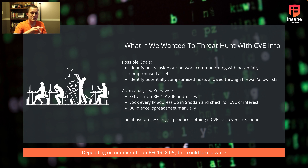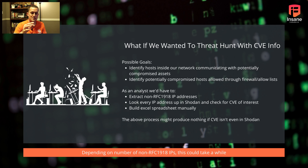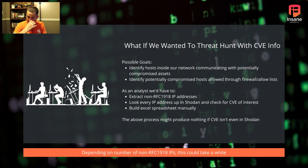If you were to do this analysis manually, you would have to grab the packet capture data or Zeek logs, take out all the private IPs, keeping the non-RFC 1918 addresses — not the 192.168s or 10.0.0s, but the external IPs. Then you'd look up each IP individually in Shodan and check for the CVE of interest, and then probably build an Excel spreadsheet to track it. This process might produce nothing if the CVE isn't in Shodan, and if you have a large number of IP addresses, it's not something you can do at scale — even for a medium-sized network. So this is a prime candidate for automation, which is why we open-sourced this tool.